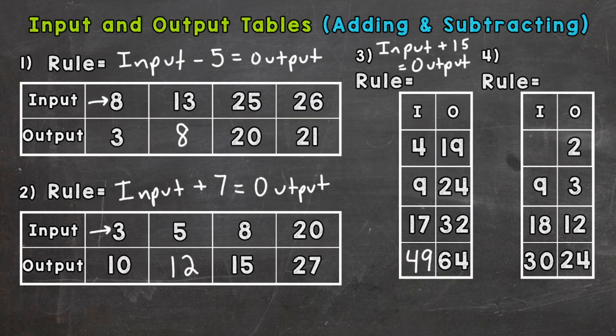And lastly, number 4. Let's start looking here with our matching terms 9 and 3. So we are decreasing in value: 9 to 2, 18 to 12, 30 to 24. So all of them are decreasing and it looks like we are subtracting.